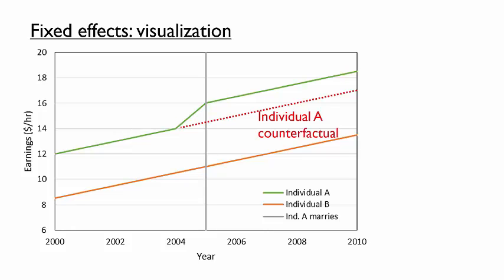In this case, we would attribute the gap between the counterfactual and actual earnings to the effect of marriage. This is exactly what the married coefficient in a fixed effects model captures — $1.50 per hour. The fixed effects estimator looks within individual A, noting the increase in wages over what we would have expected based on his age. This estimation method much more plausibly identifies the effect of marriage on earnings, rather than confounding the effect of marriage with other factors that tend to be associated with being married.